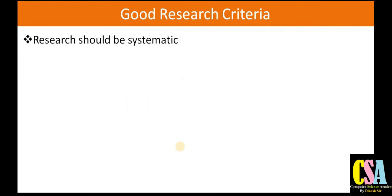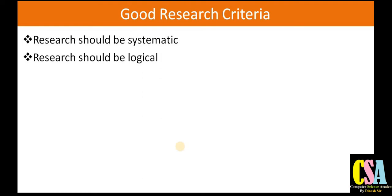Now, good research criteria — what should be the criteria of good research? The first criterion: research should be systematic. As we already know, if we are doing research, we definitely have to follow certain steps to find out the solution. The next criterion: research should be logical. We should not just go on a theoretical base; the result found out by the research should come in a logical and technical way. We have to prove how the result came — through facts, data collection, data gathering, applying techniques, simulation, and testing.